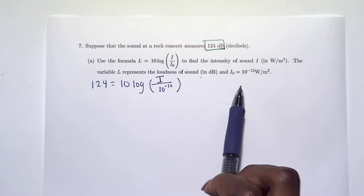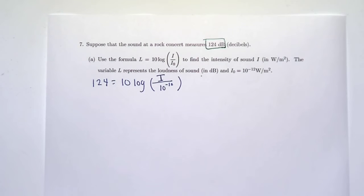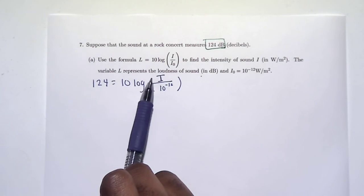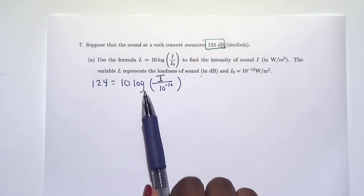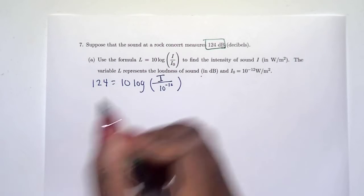We want to find the intensity of sound I, so we're solving for I. What do we notice about the location of I? I is inside of our log. So that means we need to solve so we can get inside of our log function. But before we do that, we need to isolate our log, so get log by itself. For that, I need to divide both sides by 10.